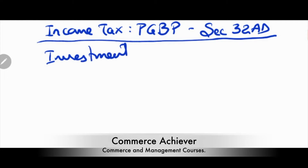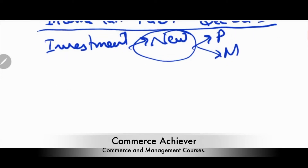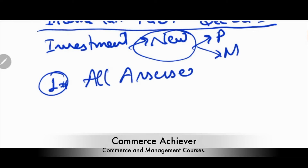Section 32 AD deals with investments where you have to save money and invest in a new plant or machinery. This section is applicable to SSCs — all SSCs are eligible for it. The definition of SSC was covered separately, please go and review it.